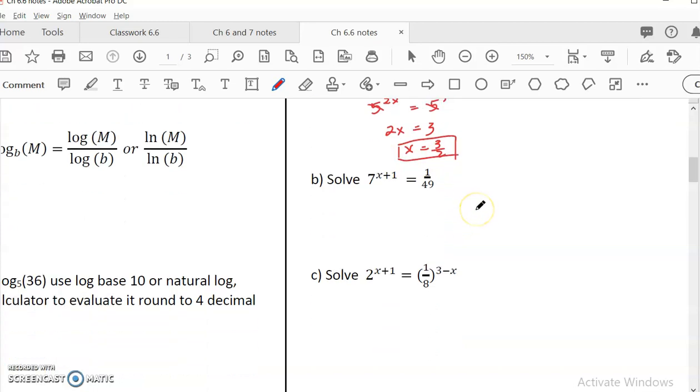Look at the second equation. Example b, 7 to the power x plus 1 equal to 1 over 49. Can I write this? So can I write 1 over 49 as 7 to the something? We know 1 over 49 is 7 to the power negative 2 because 49 is 7 squared. So I would write it as 7 to the x plus 1 equal to 7 to the power negative 2. So then they have the same base, exactly the same. So x plus 1 would equal to negative 2. So x would equal to negative 3. That's the answer. You usually would be able to get the exact answer.